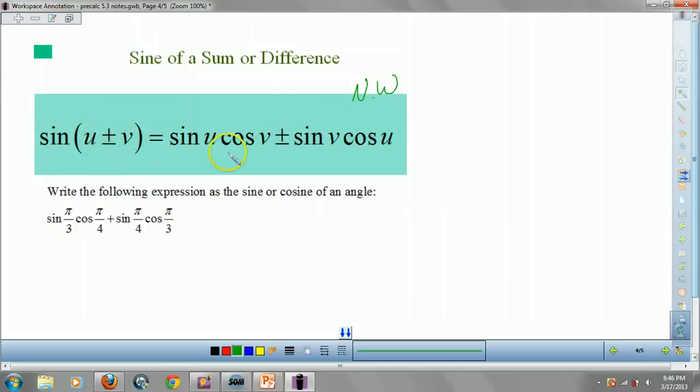Sine of u plus v is the same formula. Except here we have sine of u times cosine of v, well, sine of v times cosine of u. And these ones, the signs match. Okay? Signs match. If one's positive, the other's positive. If one's negative, the other's negative.